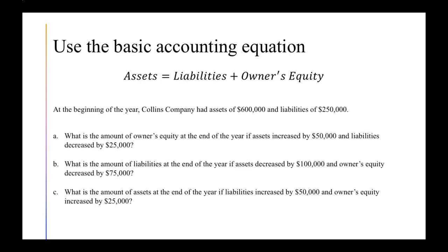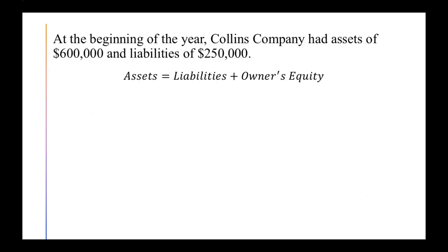The problem gives us three independent situations where we need to figure out the amount of owner's equity at the end of the year, then liabilities at the end of the year, and then assets at the end of the year — each situation independent of the others. But before we can start with parts A, B, and C, we need to figure out what our owner's equity was at the beginning of the year.